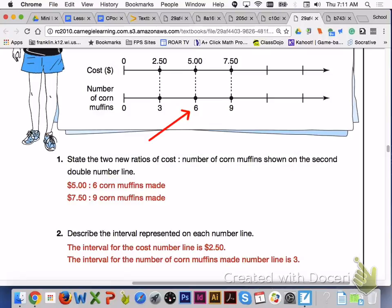The first new ratio is $5 to six corn muffins made and the second new ratio is $7.50 to nine corn muffins made. For number 2, the interval for the cost number line is $2.50 and the interval for the number of corn muffins made number line is $3.00.